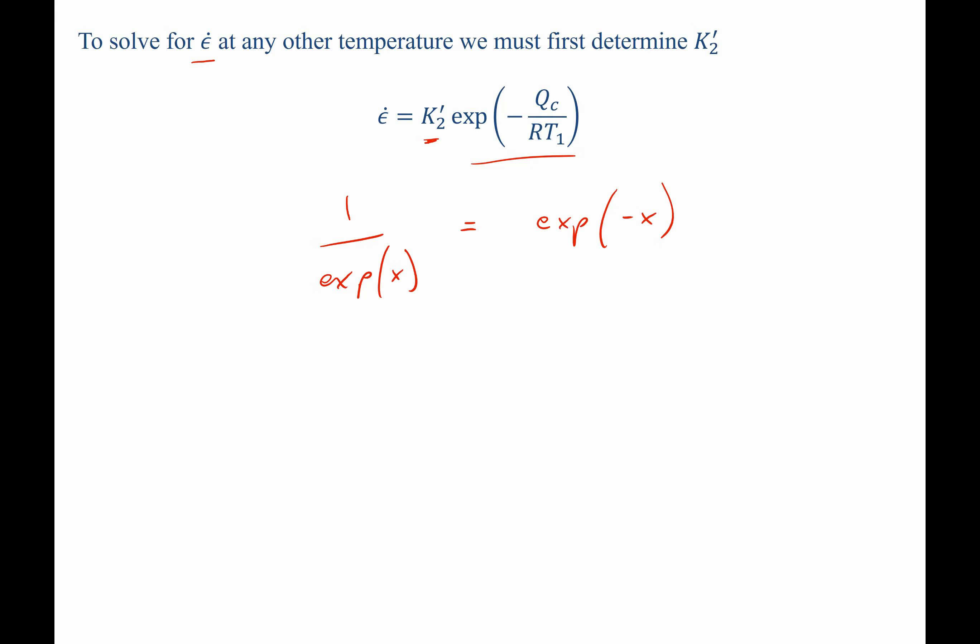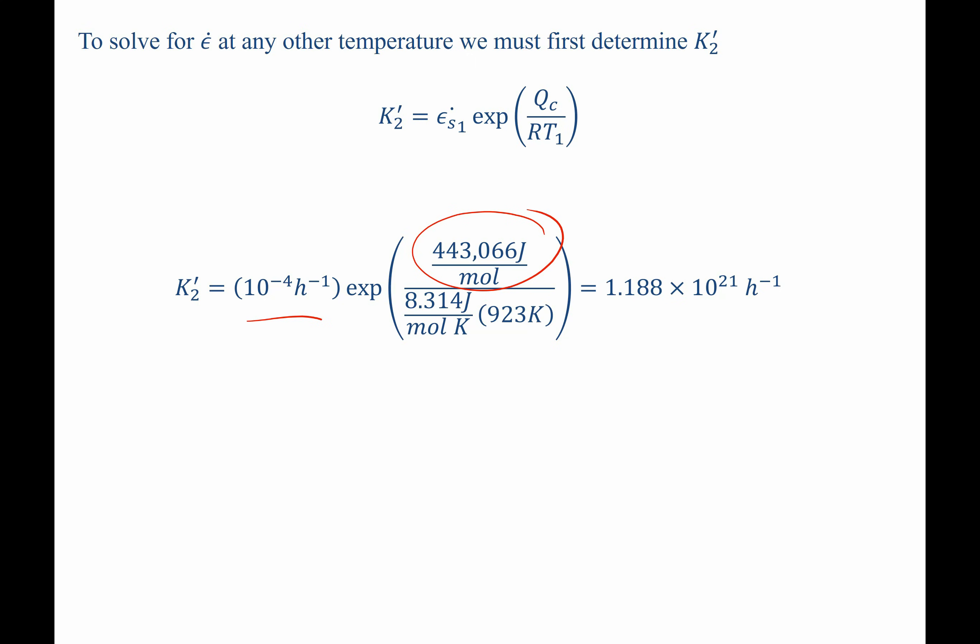That allows us to write our expression as follows. K2 prime equals our steady state creep strain rate times the exponential of our activation energy divided by RT1. When we go ahead and plug in values for these things, including our new activation energy, we solve for k2 prime as 1.188 times 10 to the 21 per hour.